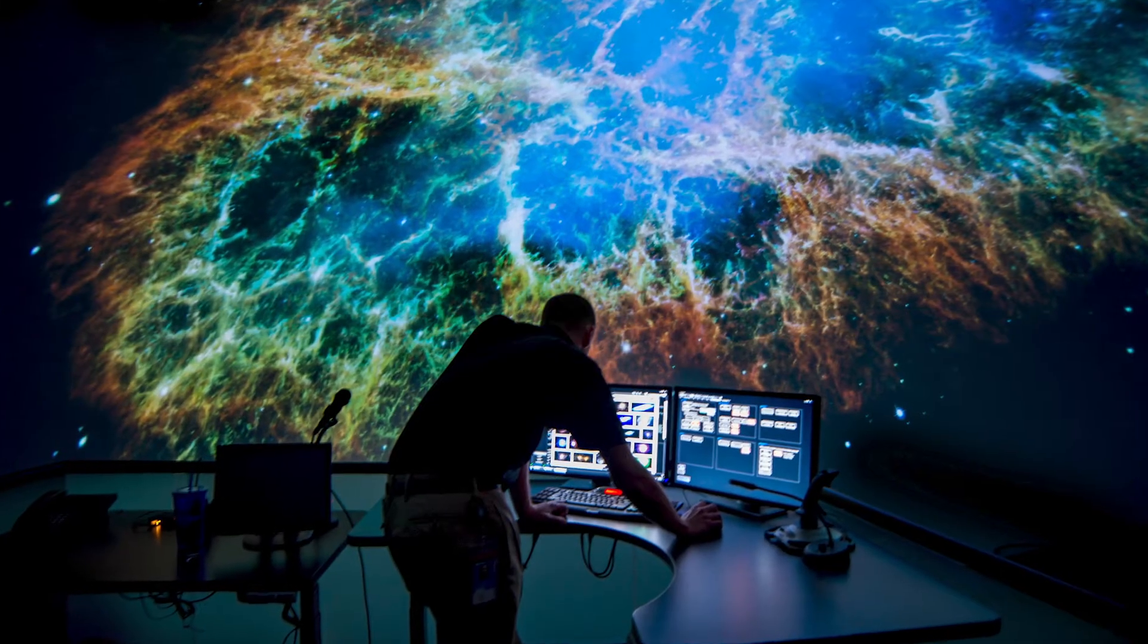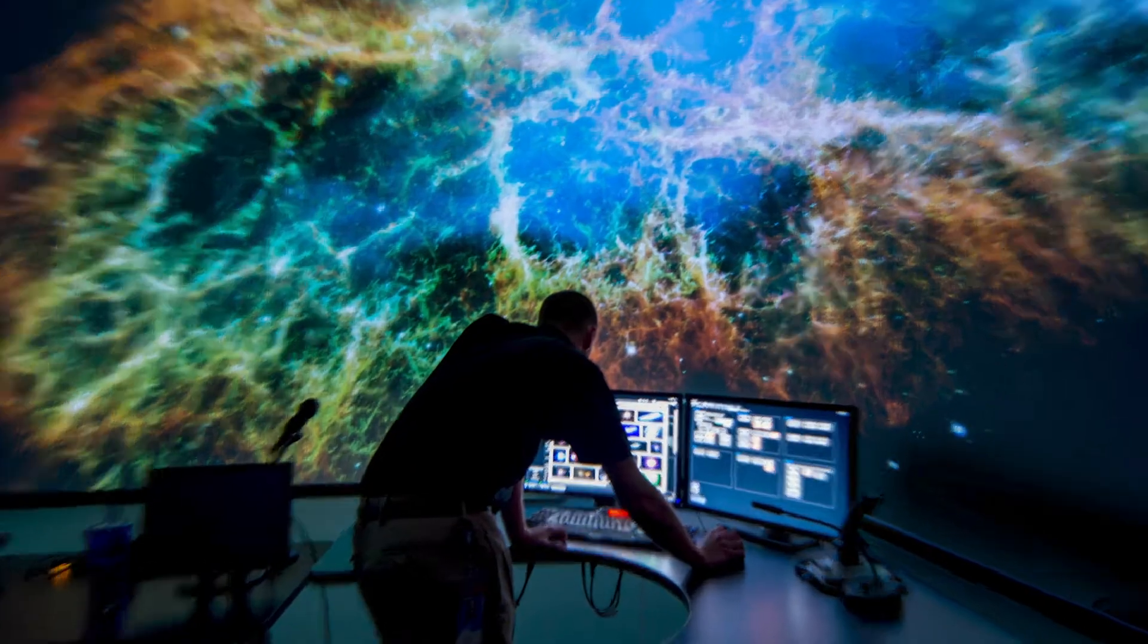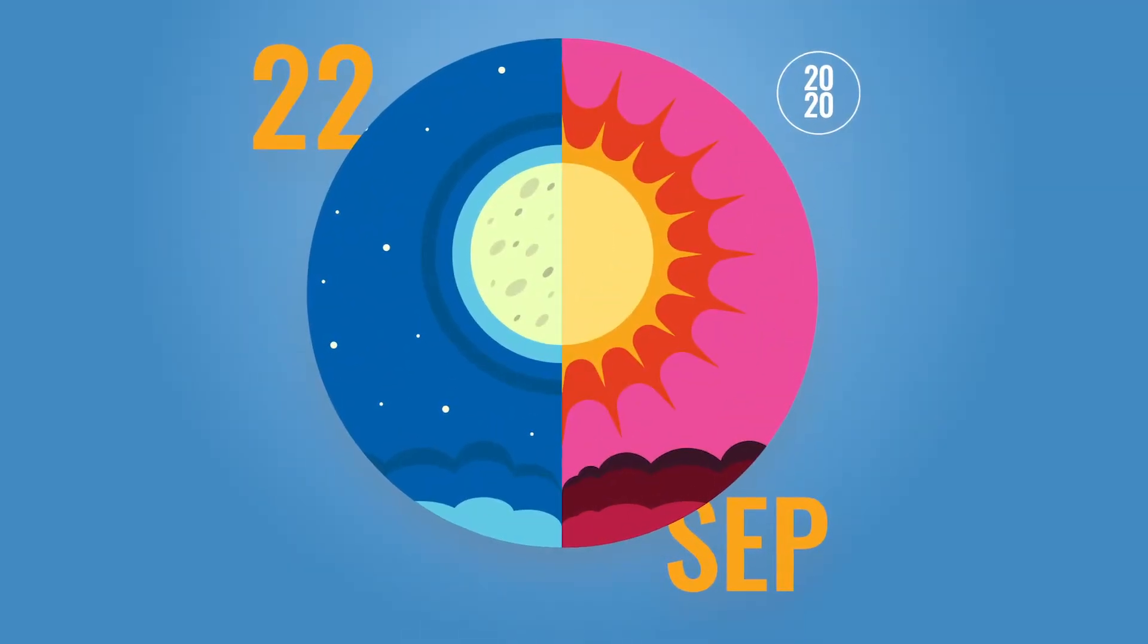Hi, everyone. My name is Justin. I'm one of the astronomers at the Science Museum of Virginia, and I'm here today because it is the September equinox.